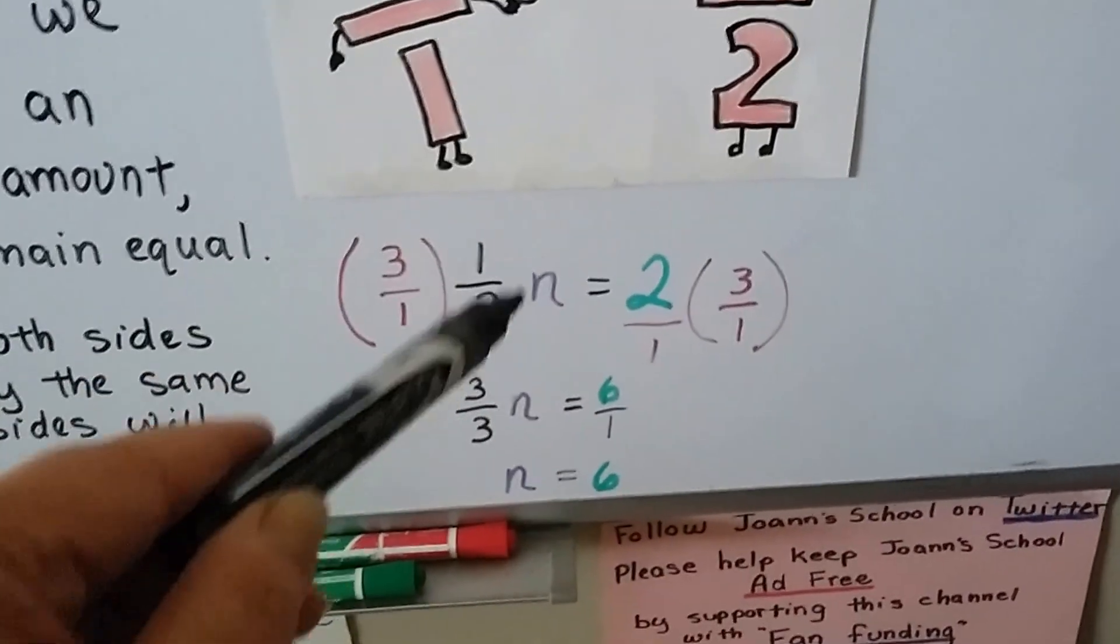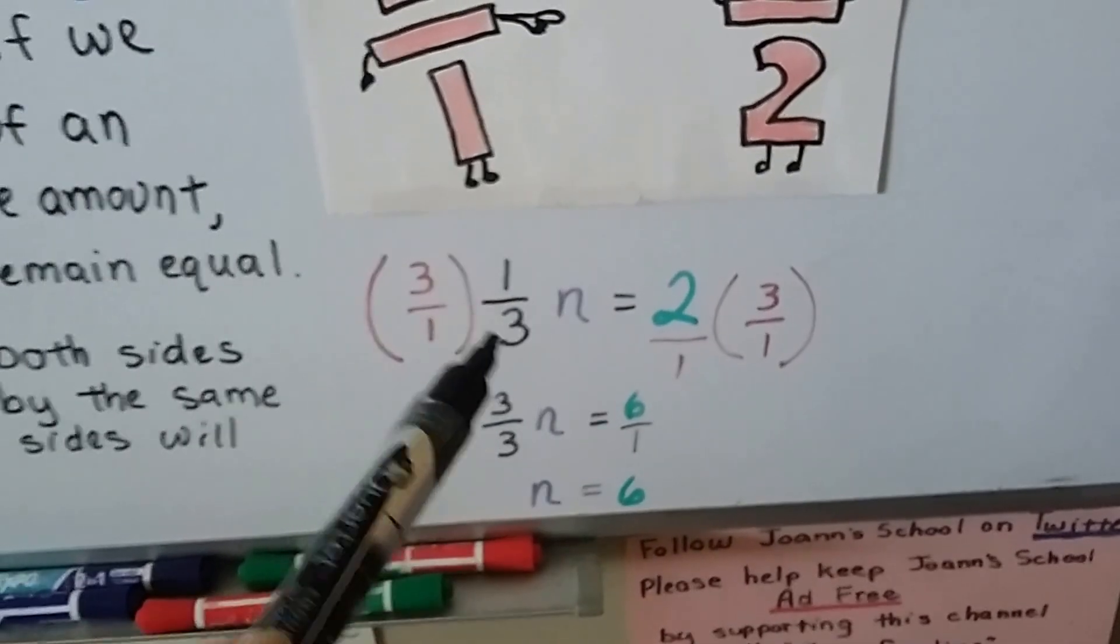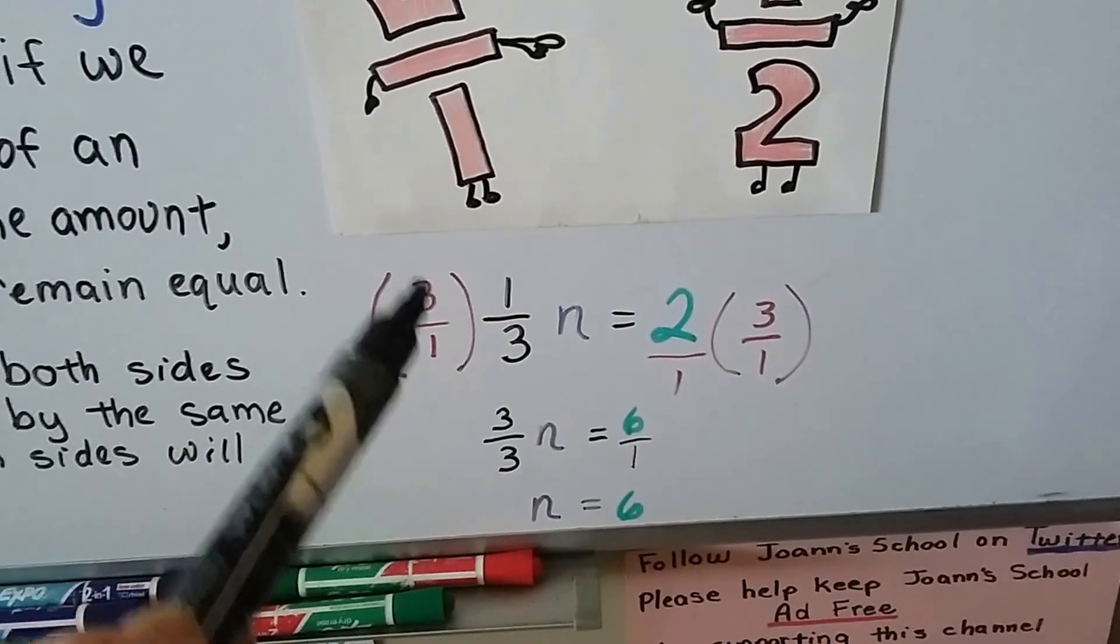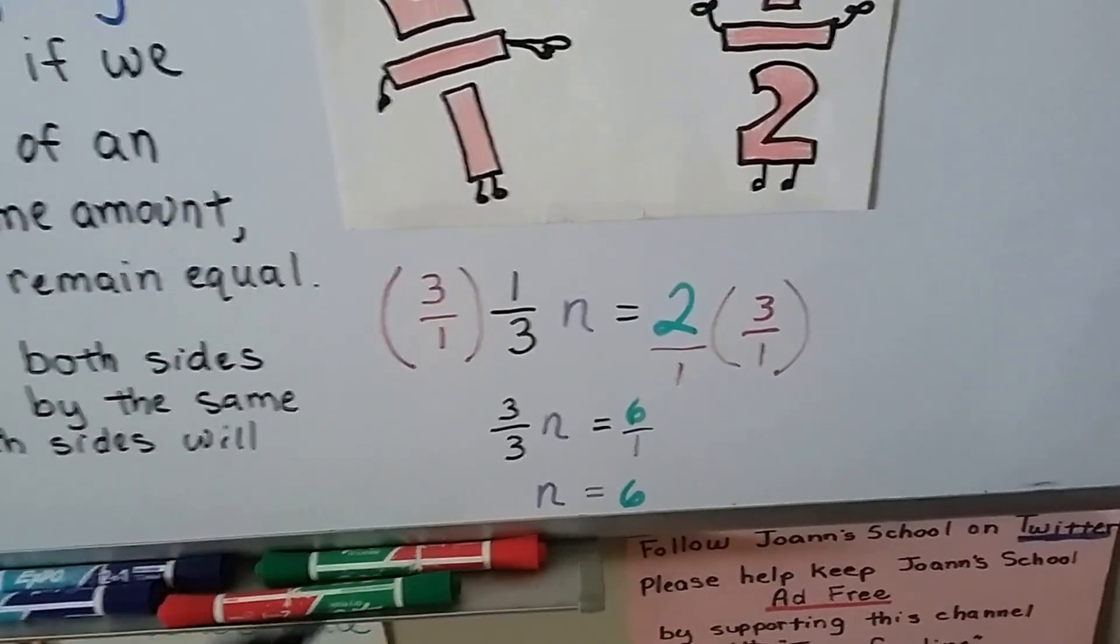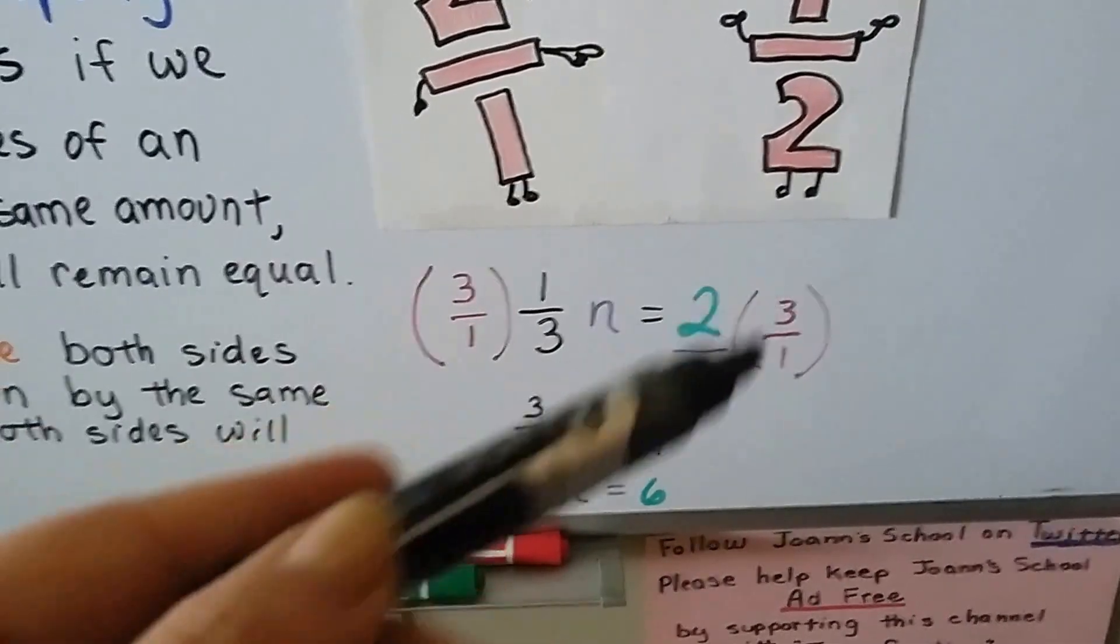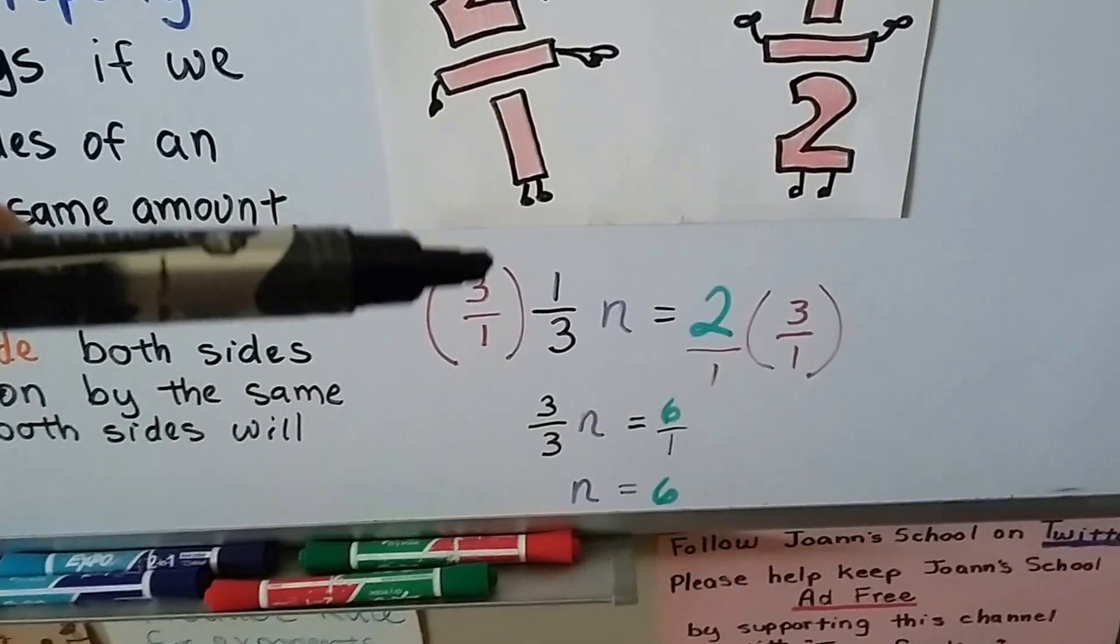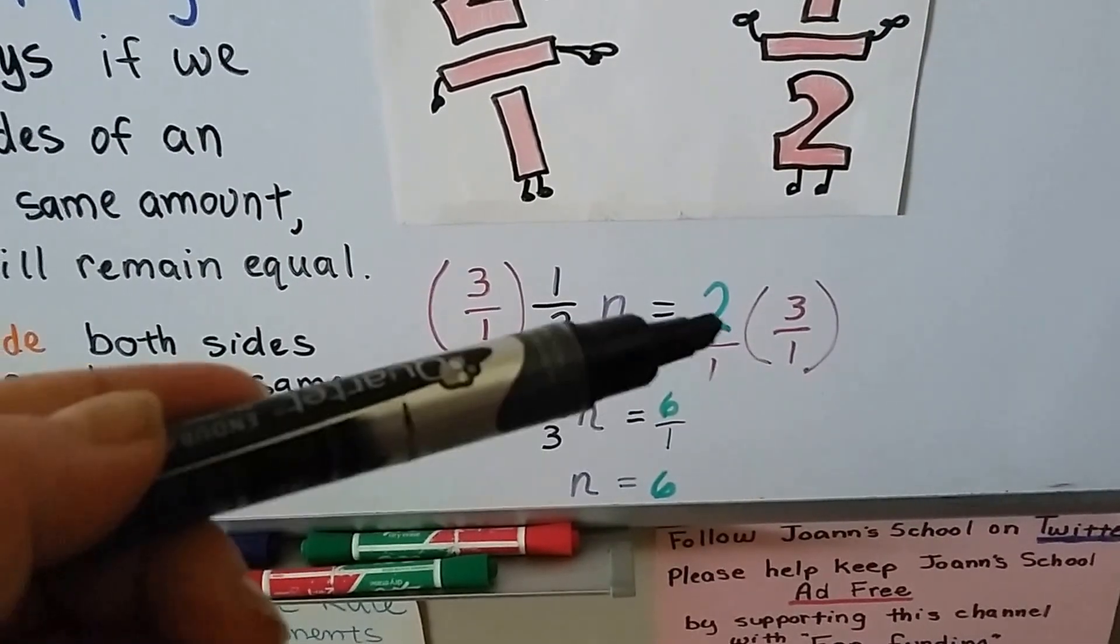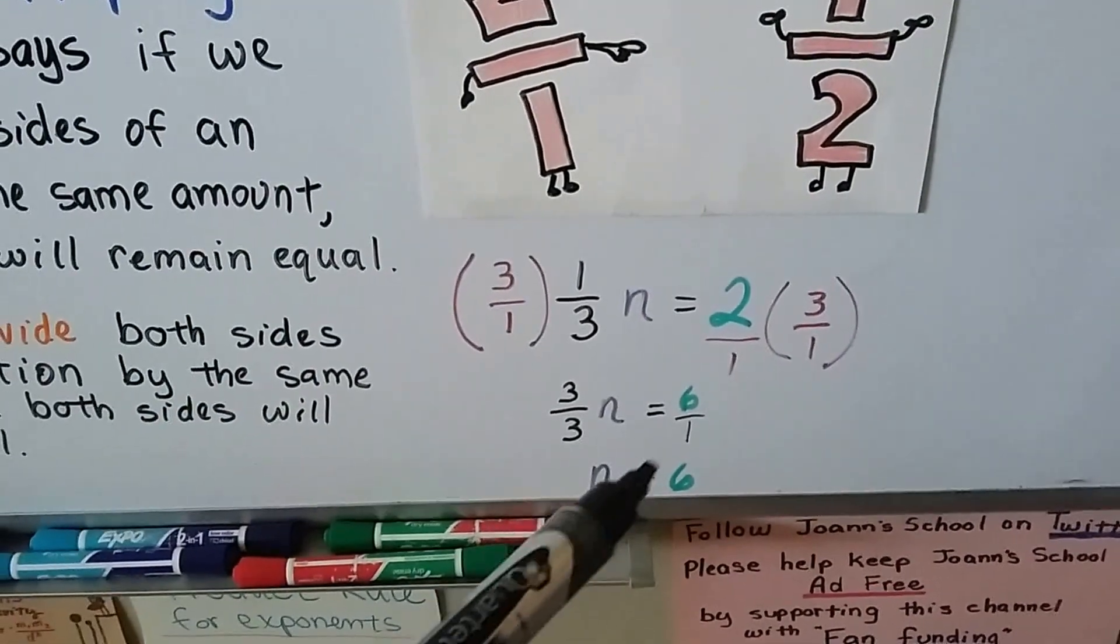If you have 1 third n equals 2, we can write the 2 as a 2 over 1 and flip this around to its reciprocal of 3 over 1 and multiply both sides of the equation by that 3 over 1. See? So when you have a fraction coefficient, it is better to use multiplication of the reciprocal on each side. So we get 3 over 3, which is 1n, and this side is 2 times 3 is 6 over 1. So we know n equals 6.